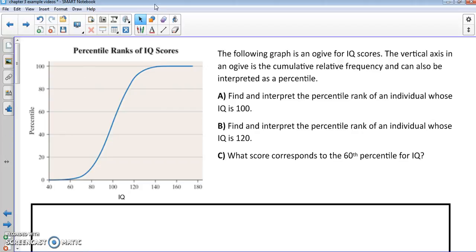So for part A here, we want to find and interpret the percentile rank of an individual whose IQ is 100. So we're going to start at 100 and come up to our graph here. And then follow that over here. So we're going to mark all of these on our graph.